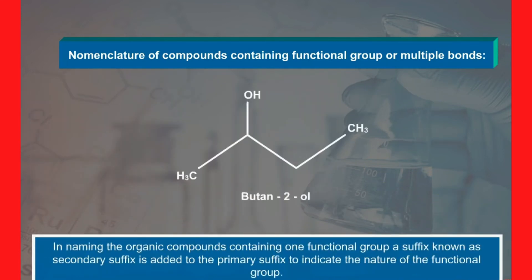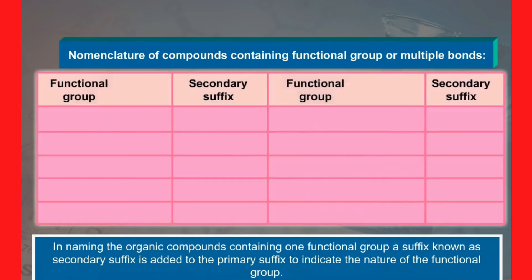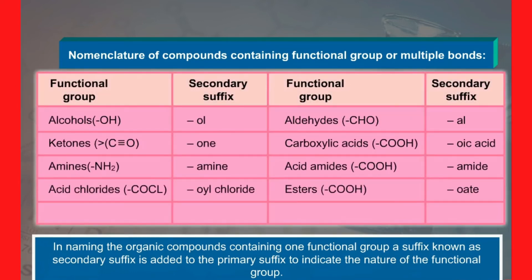In naming organic compounds containing one functional group, a suffix known as the secondary suffix is added to the primary suffix, giving the number of carbon atoms in the chain to indicate the nature of the functional group. A few important secondary suffixes are given in the table.